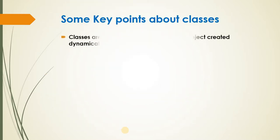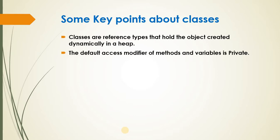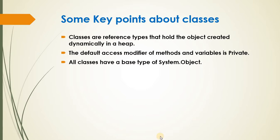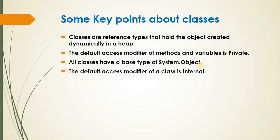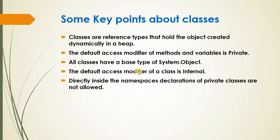Some key points about classes: classes are reference types that hold objects created dynamically in heap memory. The default access modifier of a class is internal. The default access modifier of methods and variables is private. All classes have a base type of System.Object. This is important — interview questions often ask what the default access modifier is for a class versus for methods and variables.